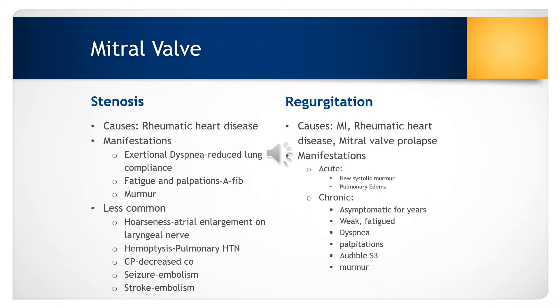Most causes of mitral regurgitation are caused by myocardial infarction, chronic rheumatic heart disease, mitral valve prolapse, and infective endocarditis. Mitral valve regurgitation allows blood to flow back from the left ventricle to the left atrium due to incomplete valve closure during systole.